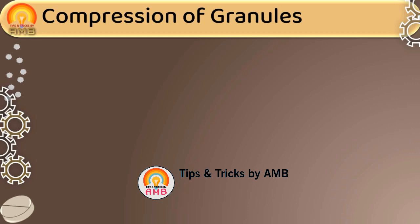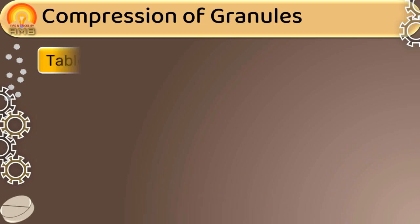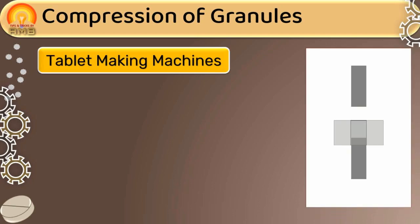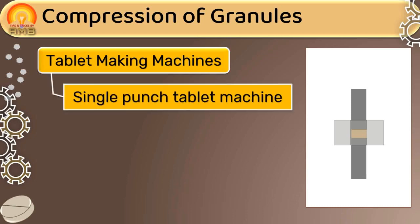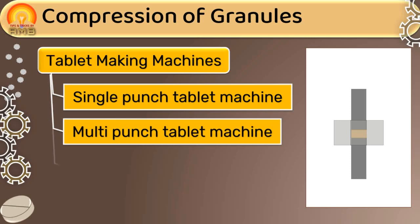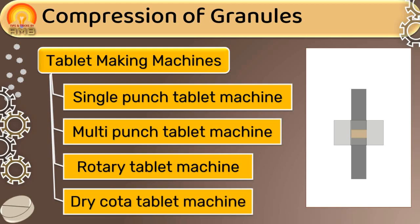After preparation of dried granules ready for compression, dried granules are compressed into tablets in a machine called a tablet making machine. A tablet making machine should have a die and a set of upper and lower punch. The required quantity of granules can be filled in the die and the granules are then compressed between the lower punch and upper punch. Various types of tablet making machines used for compression are single punch tablet machine, multi-punch tablet machine, rotary tablet machine, and dry quota tablet machine.